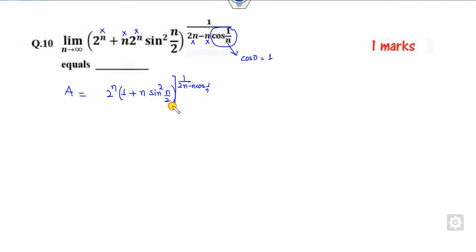Now, how to solve this? Take the logarithm. When you take the log, the numerator will be log 2n plus log(1 + n sin²(n/2)), divided by the denominator. This part becomes cos 0, which is 1, so the denominator becomes n.